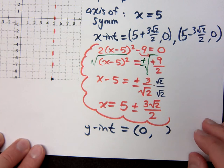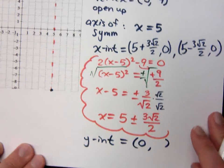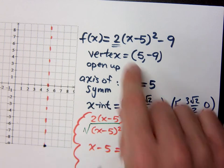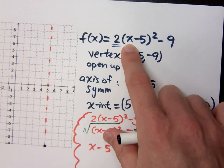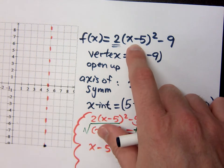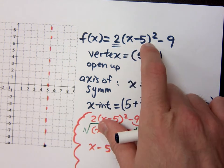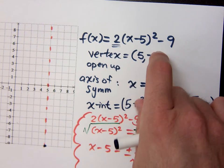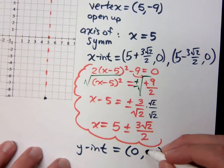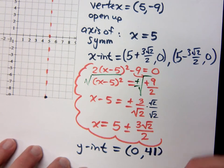You have to plug in 0, right? Make sure you do plug 0 into this guy correctly. If I plug in 0, 0 minus 5 is negative 5. What's negative 5 squared? 25 times 2 minus 9 is 41.